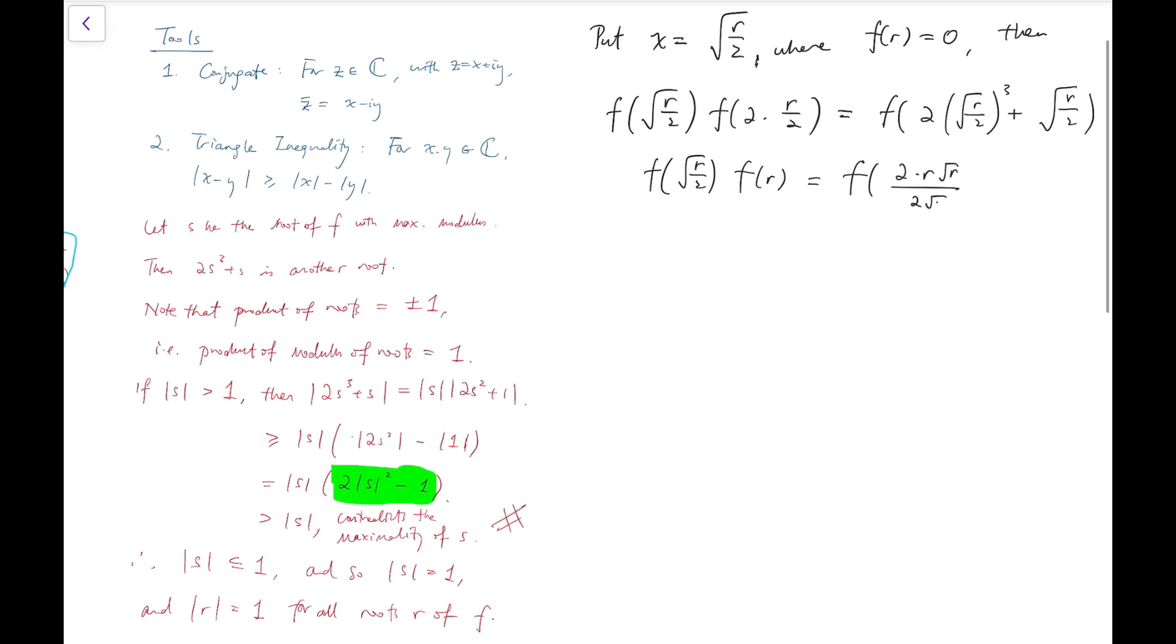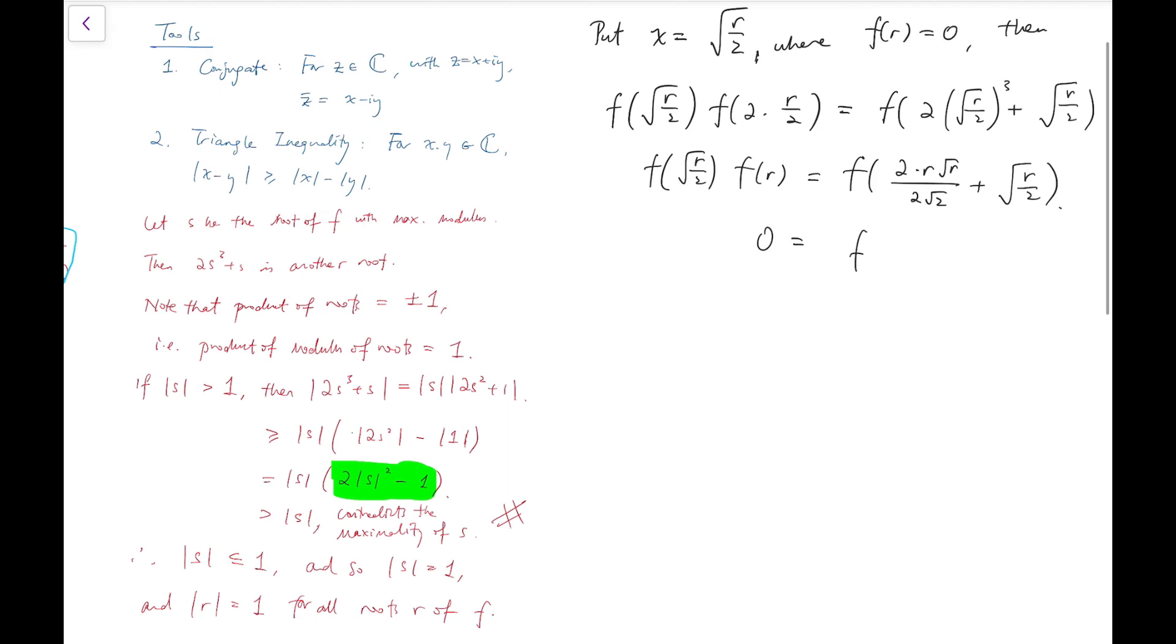And simplifying, we have this at the right hand side, and because f(r) is 0, so the left hand side is equal to 0. So then 0 equals to f((r + 1)·√r/√2), which means this is also a root of f. Now because all the roots have modulus equal to 1, so I can say that this is equal to 1.